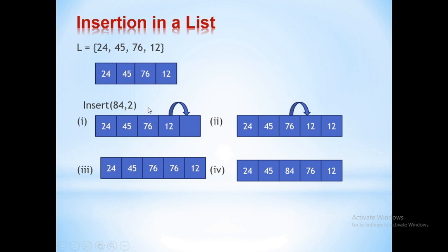To insert 84 at the second index position, 76 has to be copied one position ahead, and 12 has to be copied one position ahead. First 12 is copied, then 76 is copied, and then 84 is placed in the available location.